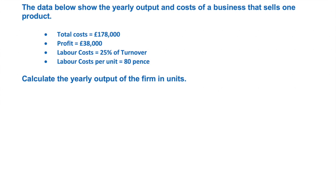The total costs are £178,000. The profit is £38,000. The labour costs are 25% of the turnover. And the labour costs per unit is 80 pence. Let's calculate the yearly output of the firm in units.